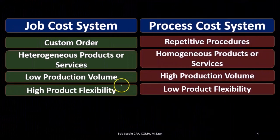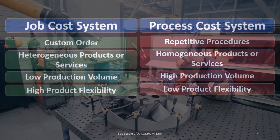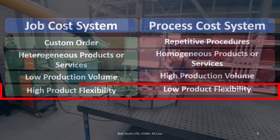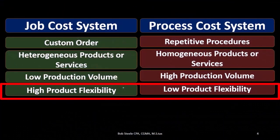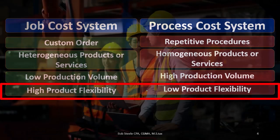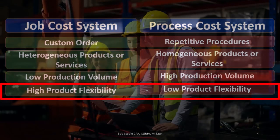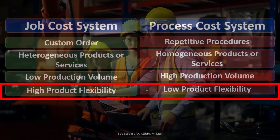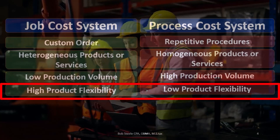The job cost system offers high product flexibility — we can vary products, and that's the point of having them be custom. On the process cost system, we have low product flexibility, and that's the point, because that's what allows us to produce more at a lower cost.